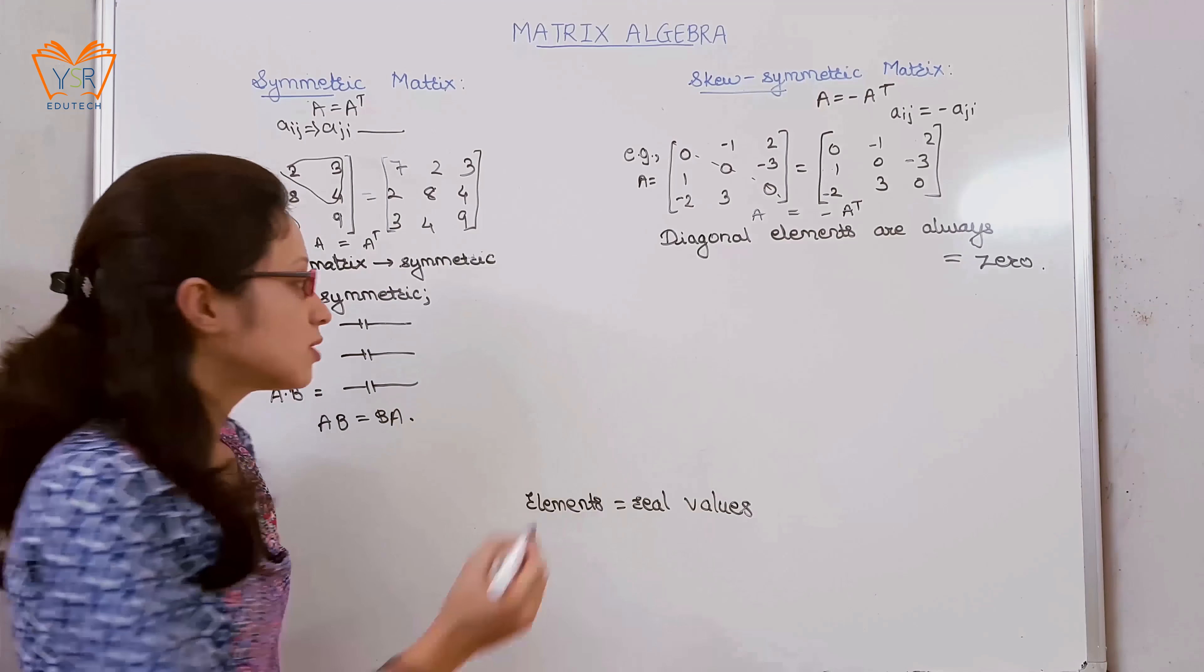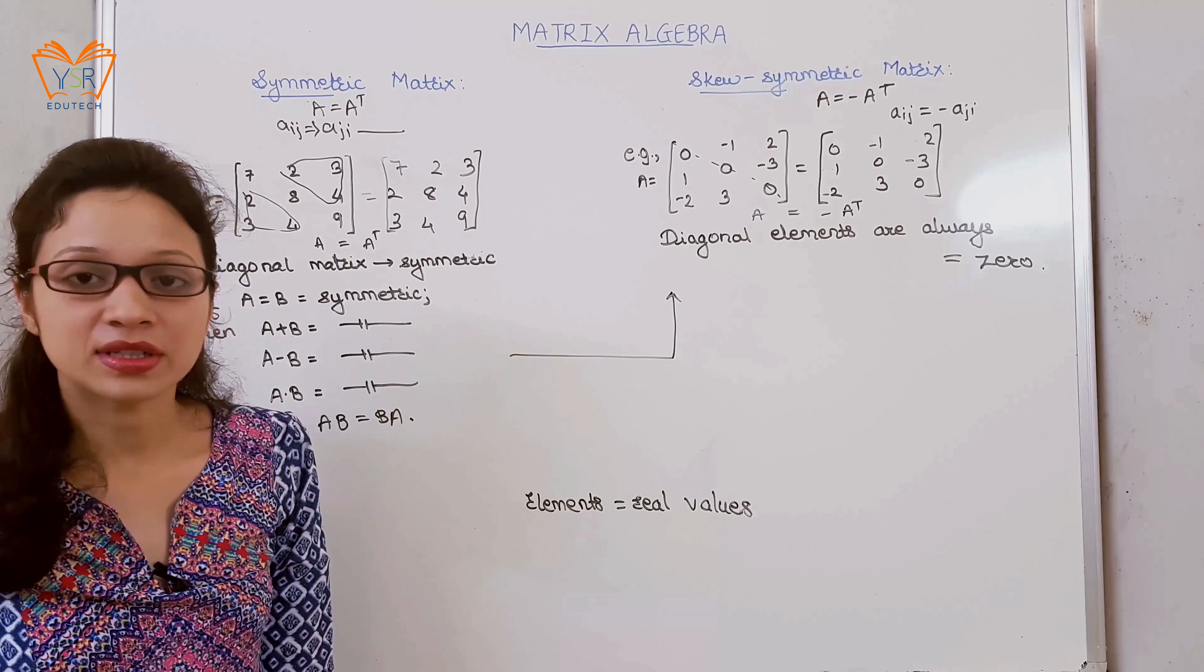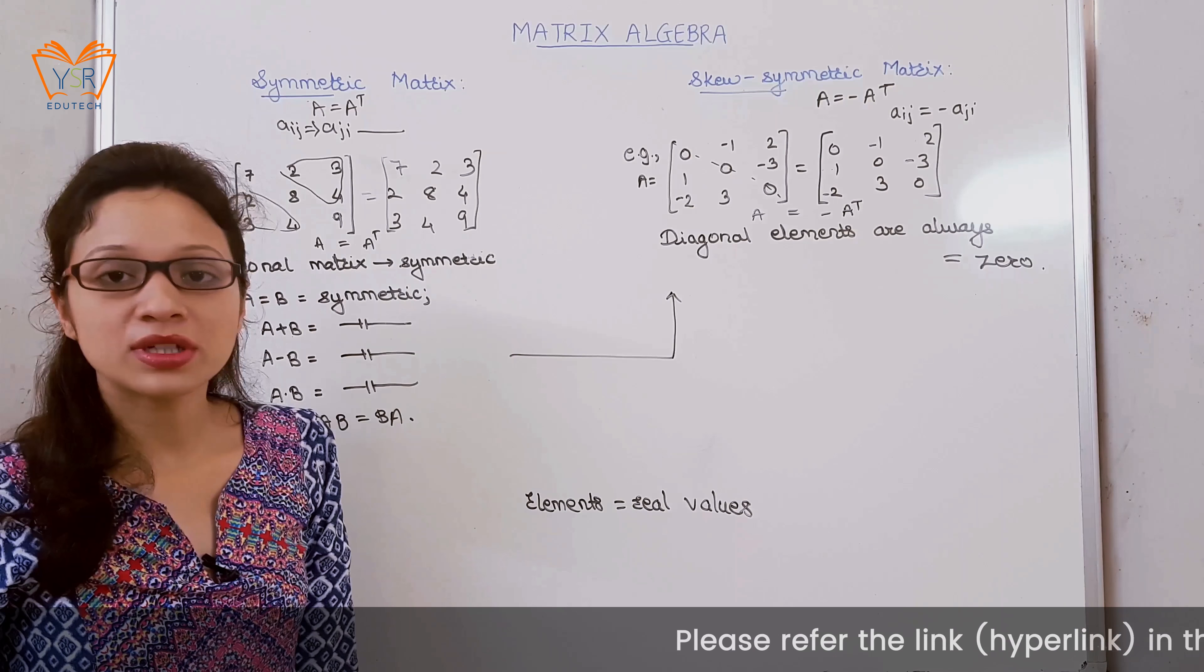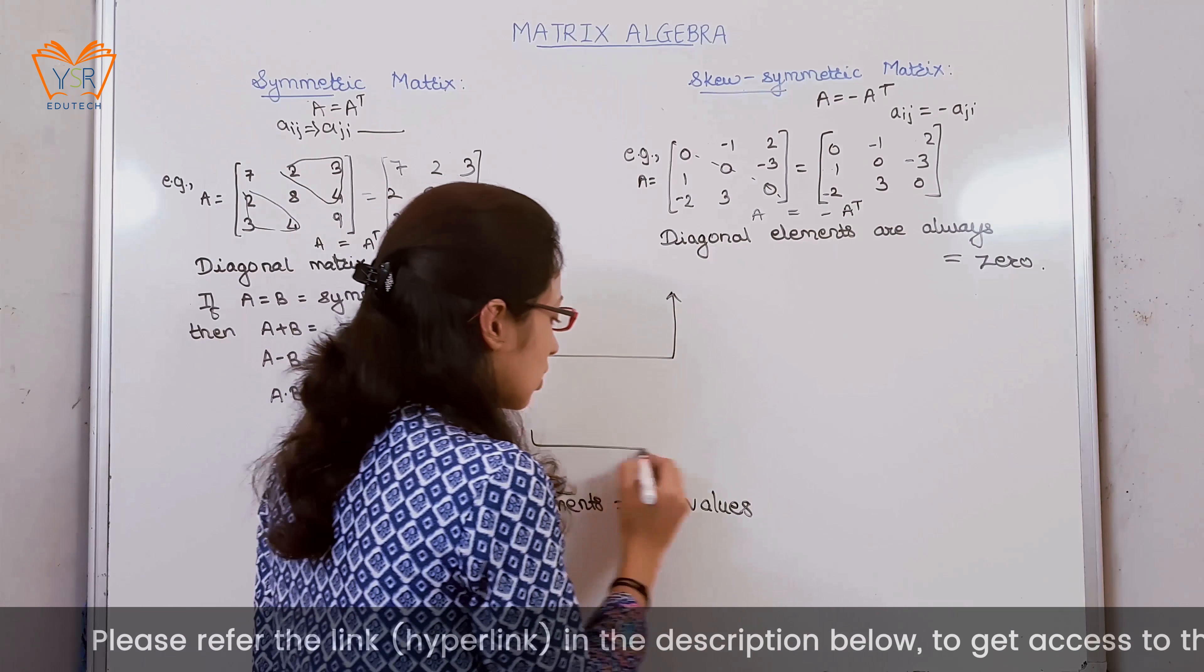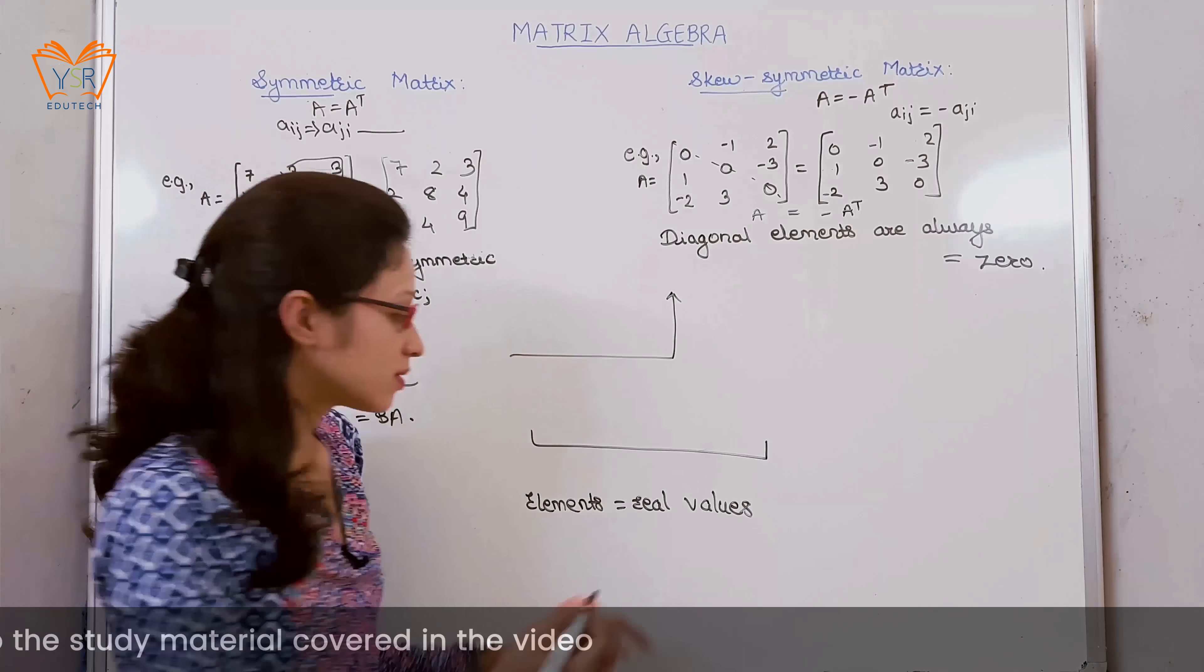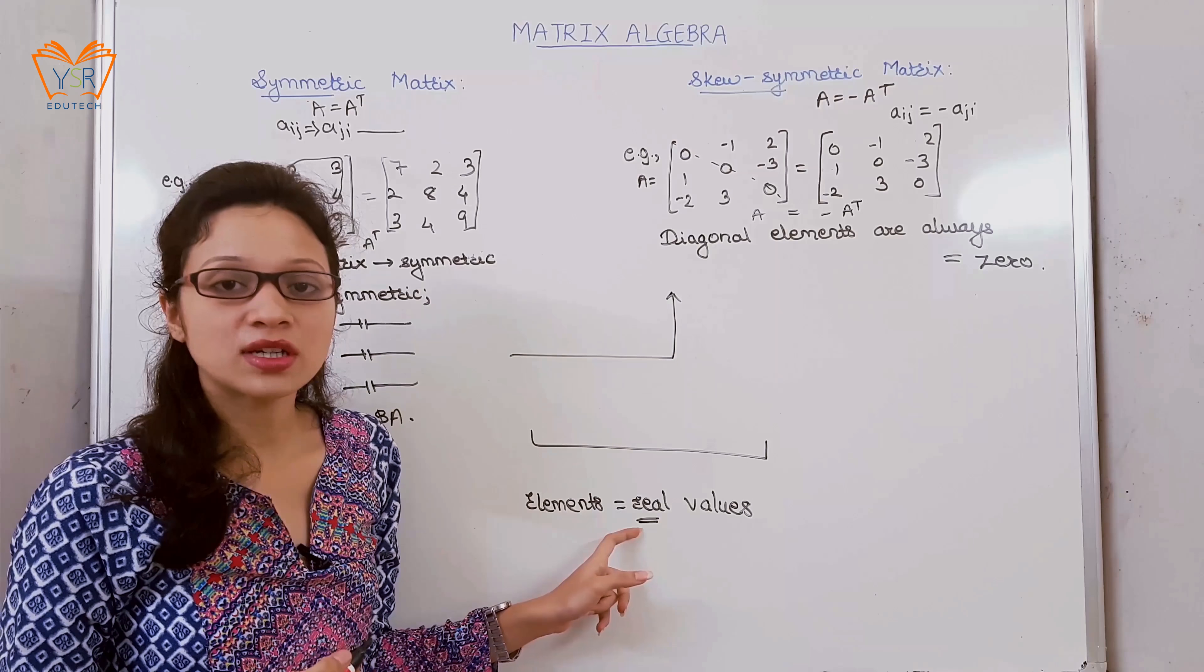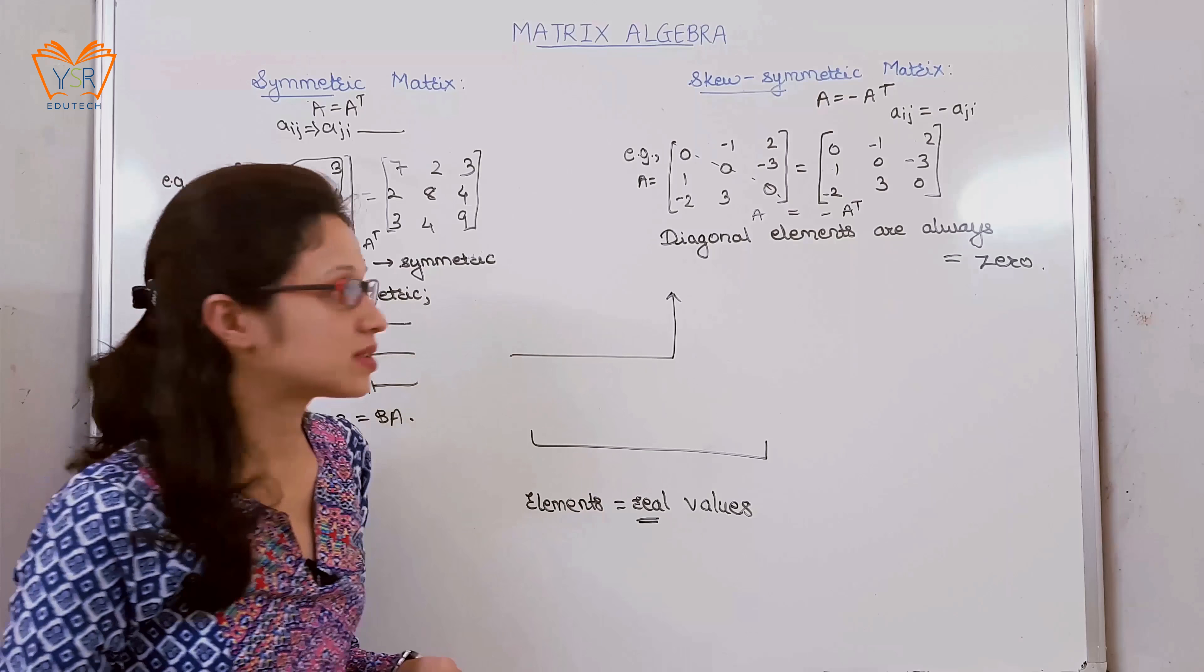Properties of skew-symmetric matrix are same as that of symmetric matrix. The important point to be noted in these two matrices: all the elements of symmetric and skew-symmetric matrix should be real values. The complex values are defined under Hermitian and skew-Hermitian matrix.